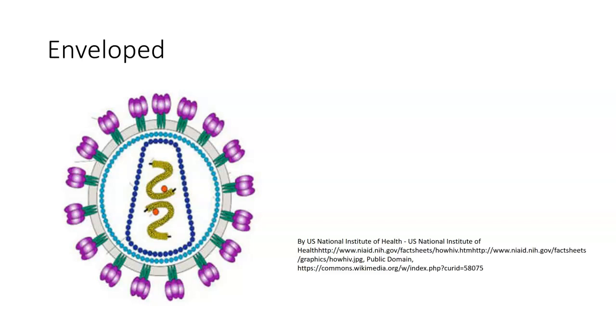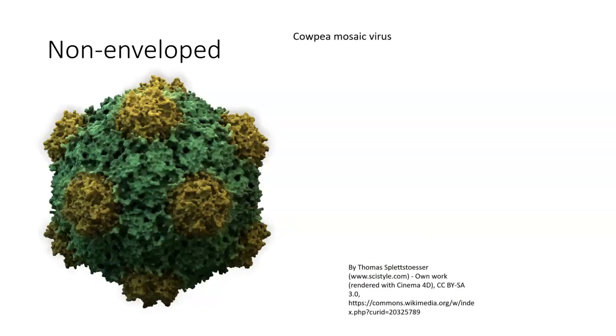These are very easy to get rid of outside of the body because all you have to do is disrupt the membrane. A non-enveloped virus looks like this. You see this particular one, which is CalP mosaic virus. You see the different proteins that go together to make up the capsid. A lot of times these have geometric shapes to them.